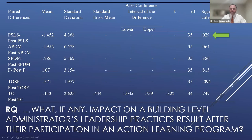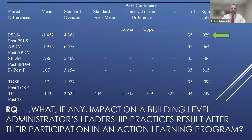Looking at these results holistically, you can see the overall impact on the school environment of the buildings after their administrators participated. Specifically, only the perception of school leader support for collaboration showed a significant change from pre to post test — and while it is an important variable, it was the only one.